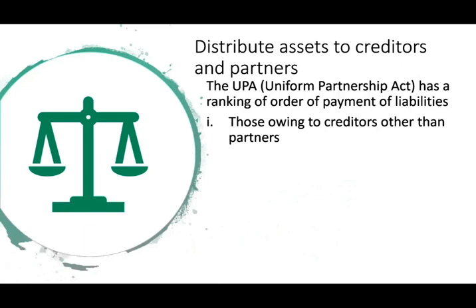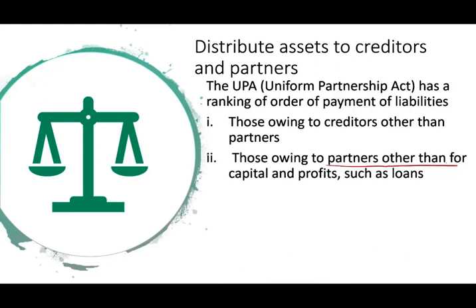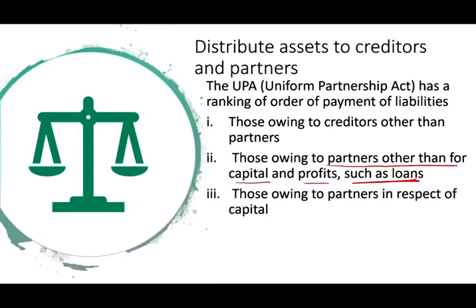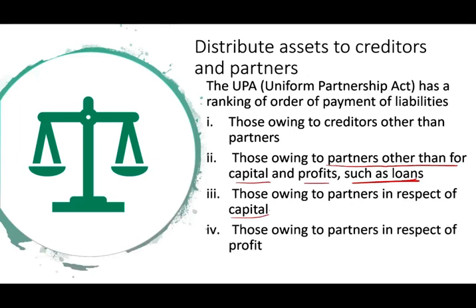Then you pay those owing to partners other than their capital and profit — for example, partner loans. If a partner lends money to the partnership, they have a priority after the outside creditors. This priority does not affect their capital or profit ratio; it is separate. Then you pay partners in respect to their capital and profit. Steps three and four are usually combined — after paying outside creditors and partner-creditors, what's left is essentially the partners' capital balances.